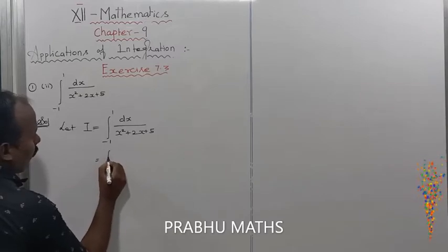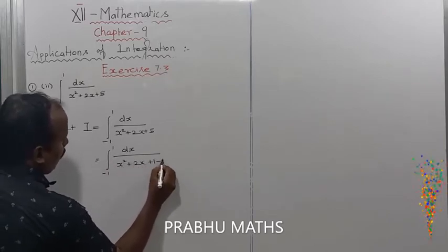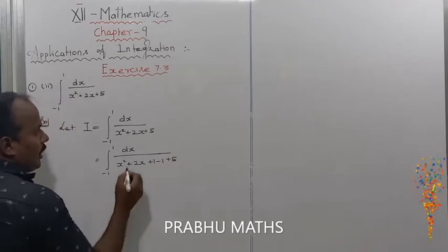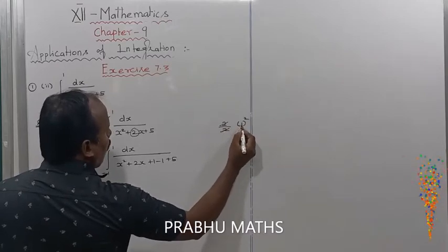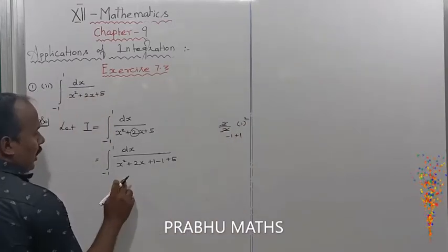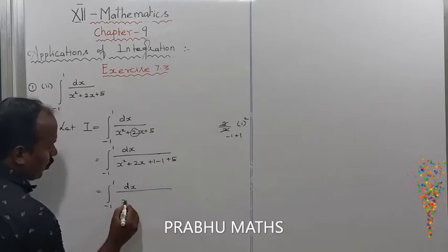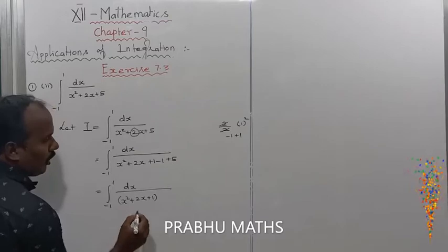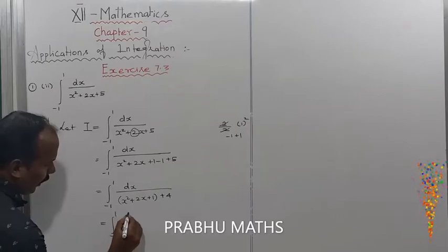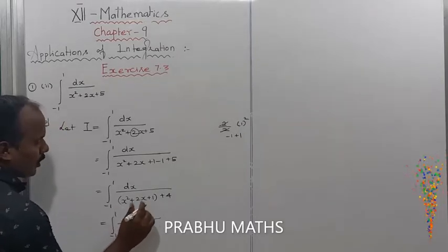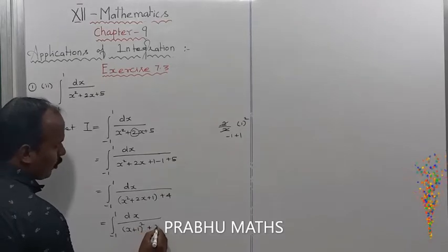First of all, convert the denominator to perfect square form: x squared plus 2x plus 1 minus 1 plus 5. The coefficient of x is 2; divide by 2, cancel, remaining 1. So we get (x plus 1) whole squared plus 4. That gives integral from minus 1 to plus 1 of dx divided by (x plus 1) squared plus 2 squared.